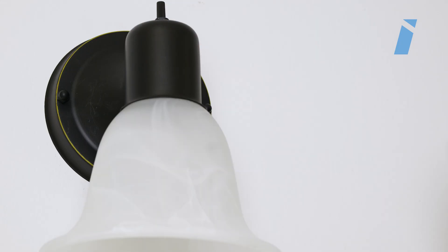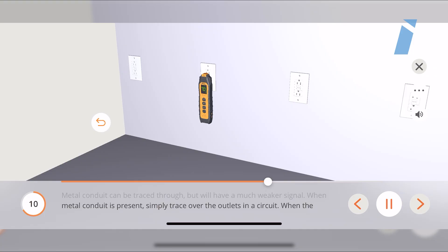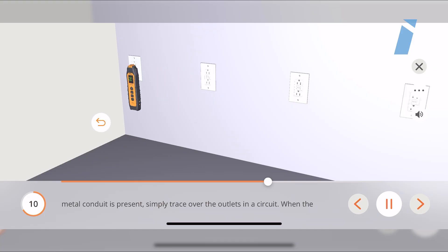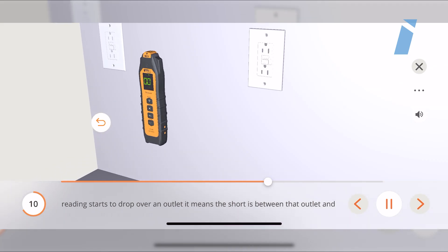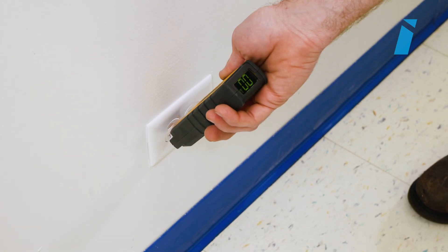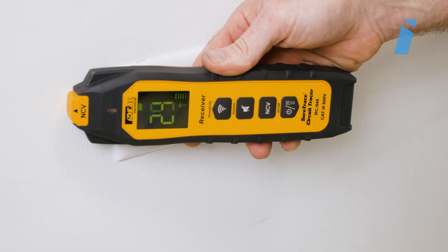When searching for a dead short in interconnecting conduit, it may be difficult to trace through metal conduit. In these cases, simply trace over the outlets in the circuit. The outlet where the reading starts to drop means the short is between that outlet and the previous traced outlet.